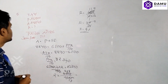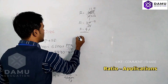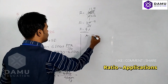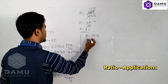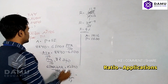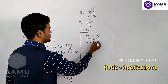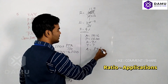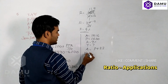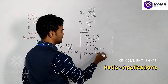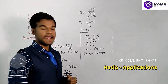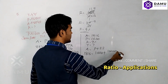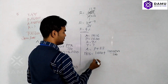Now we need to calculate time. Amount given is one thousand eight hundred and sixteen, P is given as one thousand six hundred, rate is the same nine percent, and time we need to calculate. Amount equals principal plus simple interest: 1816 equals 1600 plus PTR by hundred, where P is one thousand six hundred, rate is nine, by hundred.